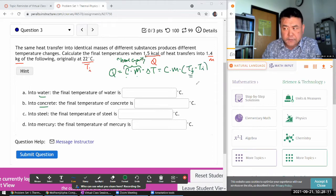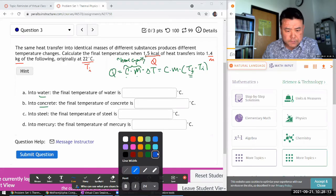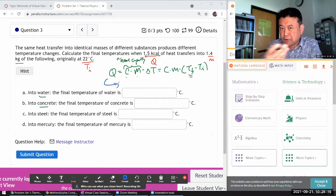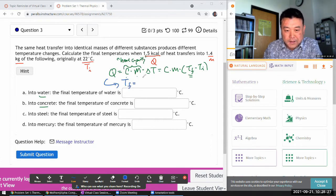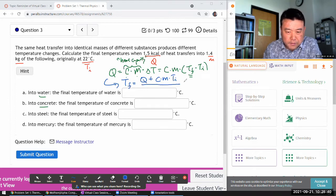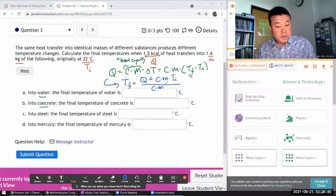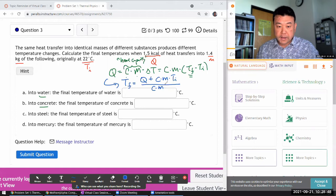So I can solve this for T final, and let me do most of this in my head. You are welcome to pause the recording and double check if I did it correctly. And if I did it correctly, it should look like T final is equal to heat transfer plus C times M times initial temperature divided by C times M.